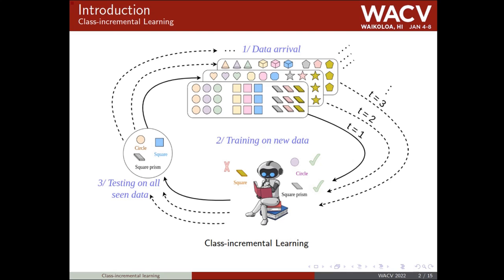Class incremental learning consists in learning continuously from streams, where at each new state a new group of classes appear. The goal is to update our artificial intelligence system using data from these new classes and evaluate it on all classes seen so far. Class incremental learning is interesting in dynamic environments when resources are limited in terms of memory, computational power, and execution time.